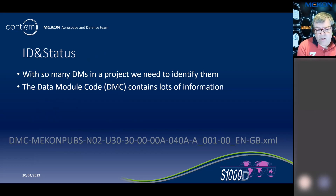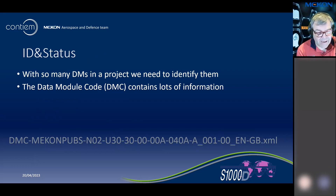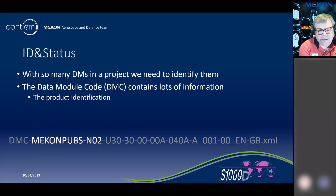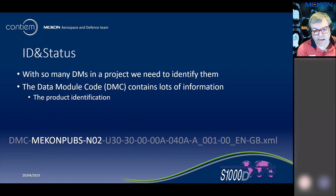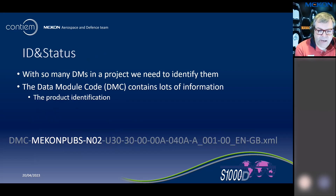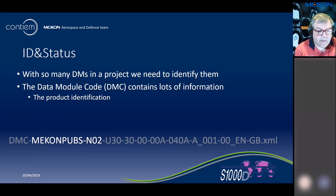All of that identification is pulled out into what's known as the data module code. Typically we'll talk later about information management systems — S1000D uses a type called a common source database. Even in a file system, our files have names that show that data module code, so we can start to recognize how information is broken down. When you first look at it, it's just a big long string of letters and numbers. DMC at the beginning stands for data module code, and the .xml on the end tells us whether it's XML or SGML.